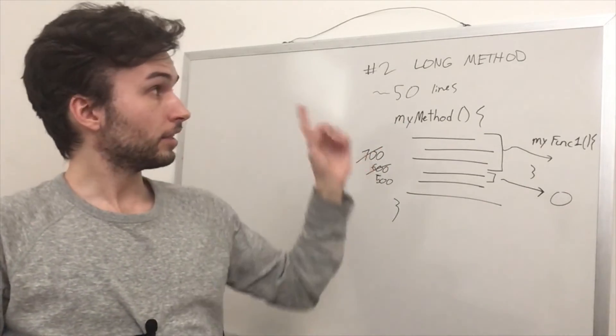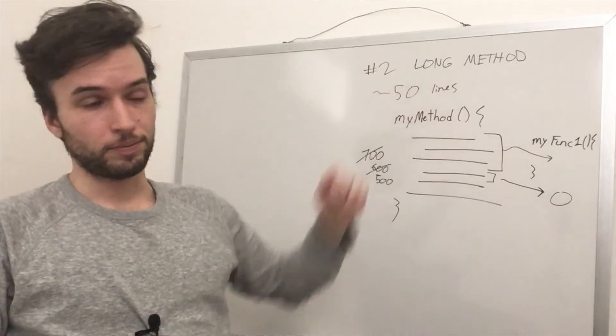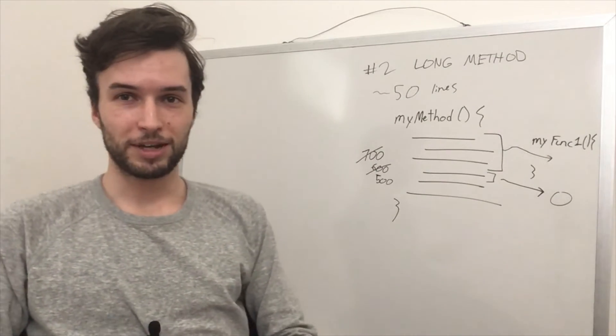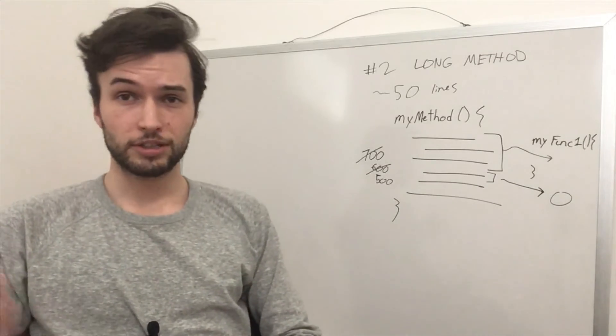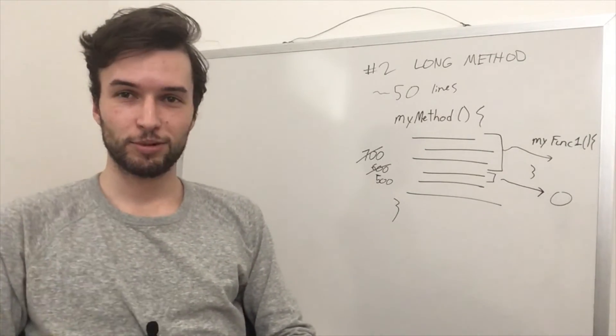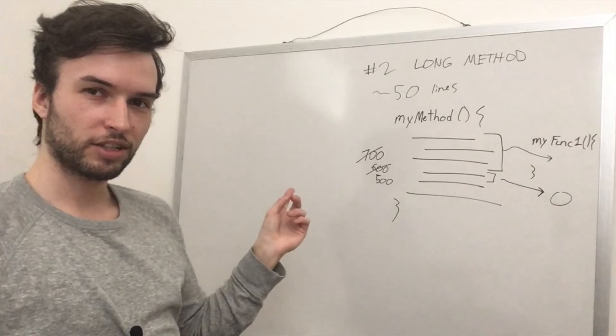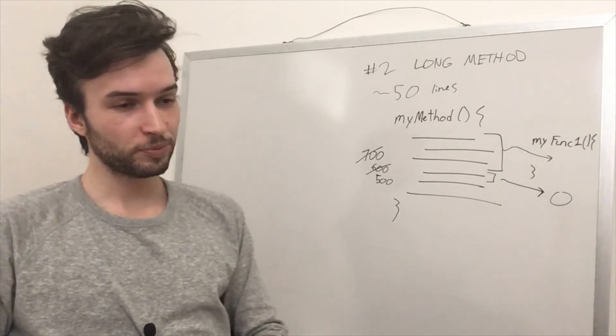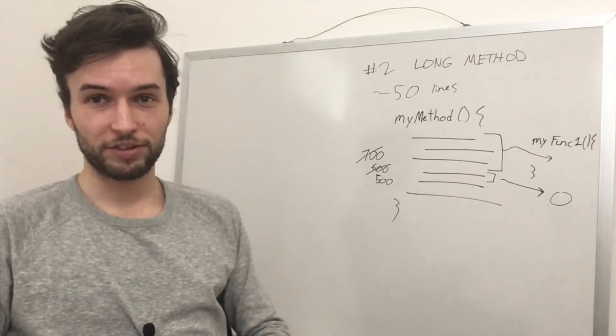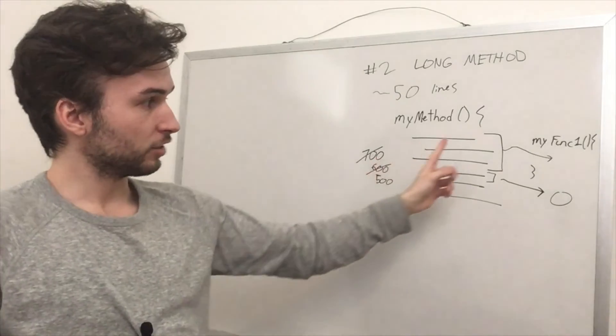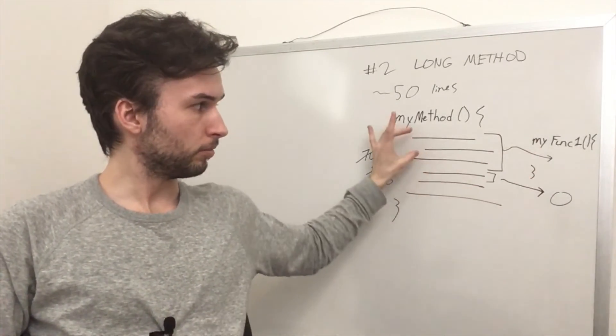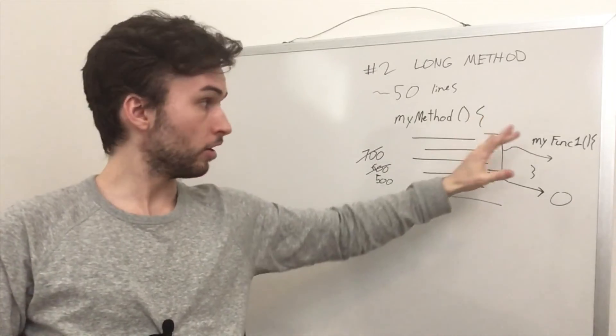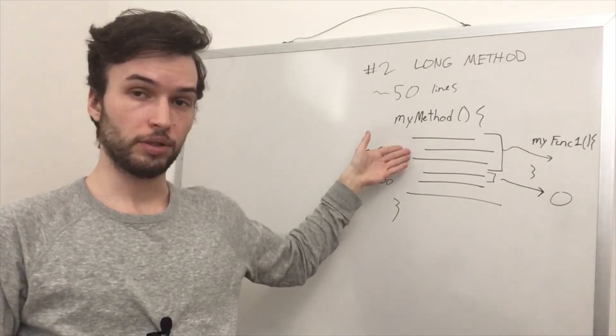So guys, that is the long method design smell. So keep an eye out for that one. It can be quite nasty if it gets too out of hand. Let me know your thoughts in the comments below. Have you seen this sort of stuff? Do you have one of these lurking around in your own project? If you do, I highly recommend you fix it. Simply using the extraction method. Extract it into its own method. Certain parts, which makes sense, and then call that method in the original one.